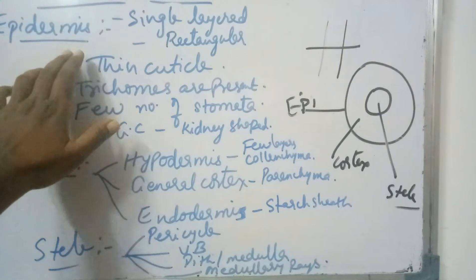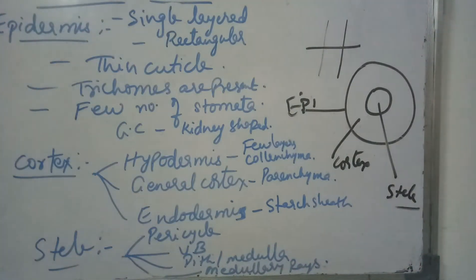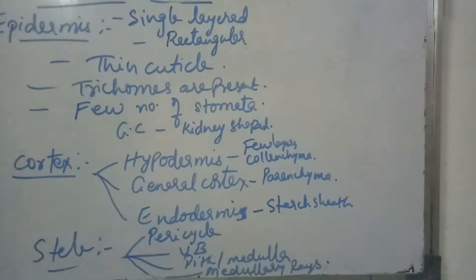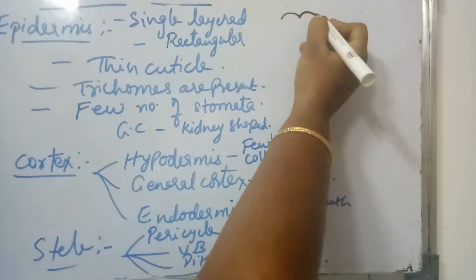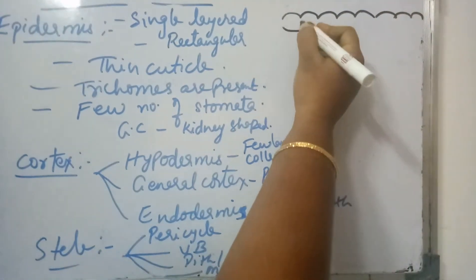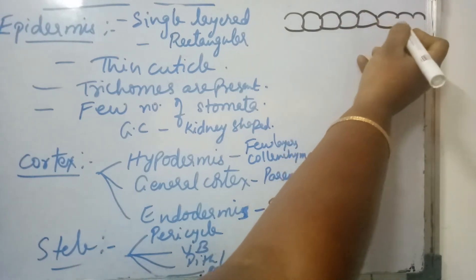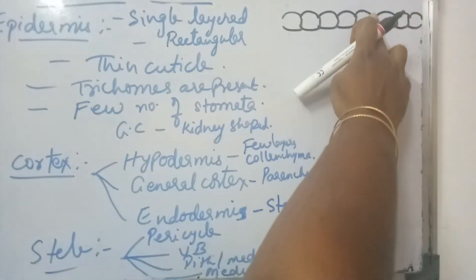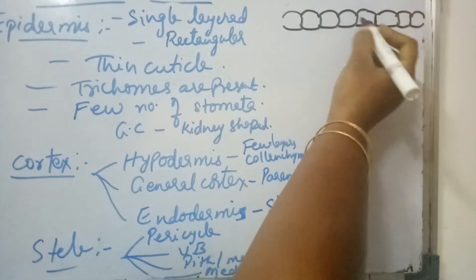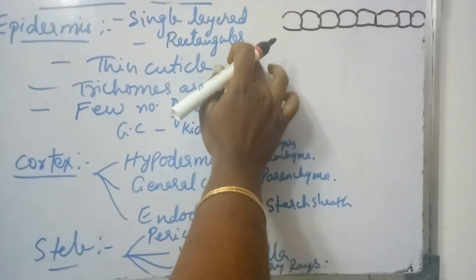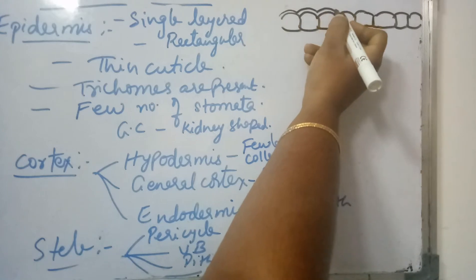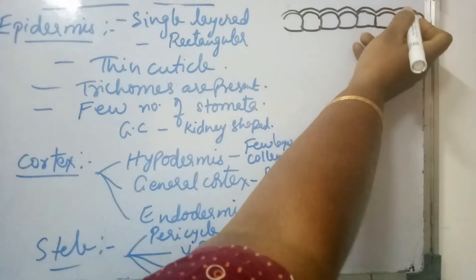Coming to the first outermost layer — epidermis. Epidermis is single layered. It is made up of rectangular shaped cells arranged compactly without any intercellular spaces. And the epidermis is covered by a thin layer of cuticle.